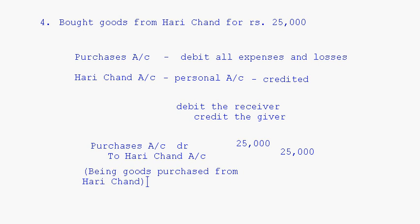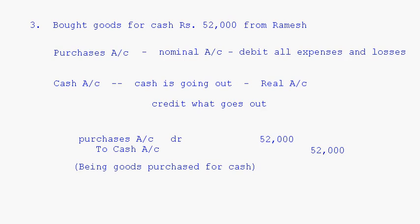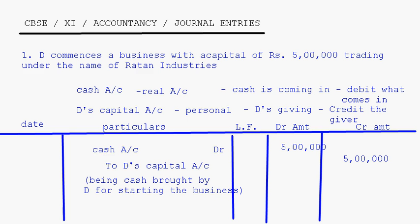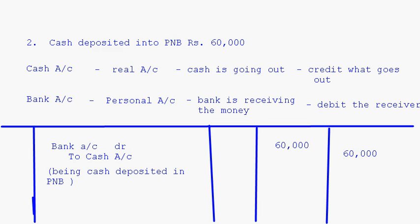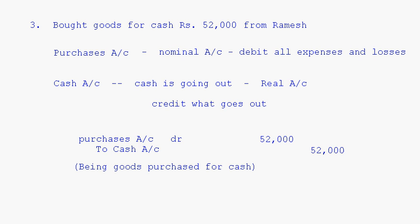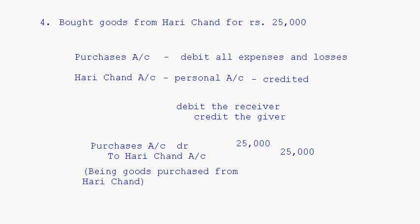So we have seen four journal entries: commencement of business, cash deposited into bank, bought goods for cash (cash purchase), and also the journal entry for a credit purchase. With that I'll come to the end of this session. We'll take up more journal entries in our next session. Bye.